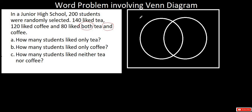Let us solve this problem by illustrating or visualizing first with the use of a Venn diagram. In our Venn diagram, the rectangle represents the universal set. Since there are only two sets under consideration — the set of students who like tea and the set of students who like coffee — we have two overlapping circles. And in the Venn diagram, since there are two sets, there are four regions: S1, S2, S3, and S4.